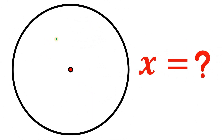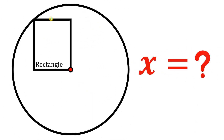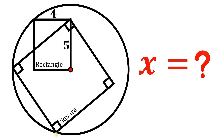So let's start with the circle. Now let's put a rectangle inside of it with a side length of 4 and 5 units. Now let's put a square so that two vertices are tangent to the circle and this vertex touches the vertex of this rectangle. Now the length of the side of this square is simply equal to x.